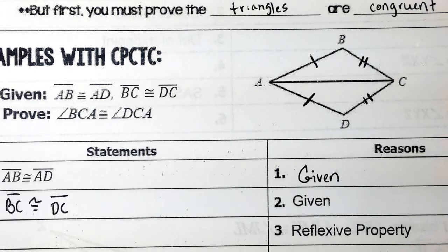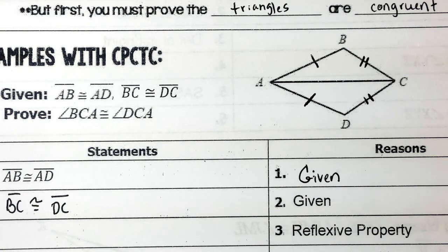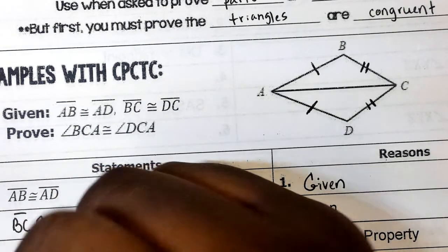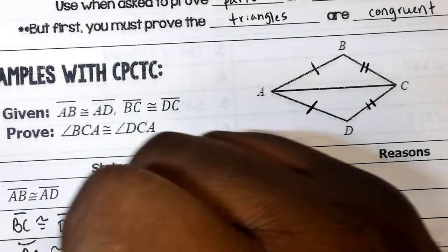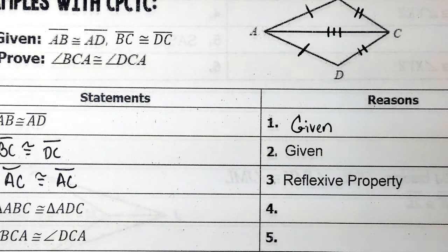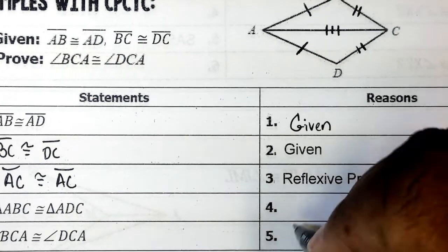Look at the statement and let's see how to name it. AC is congruent to AC — reflexive property. We mark that on the figure. Then triangle ABC is congruent to triangle ADC. This is side-side-side congruency. It should be obvious to you if you mark your figure up correctly.